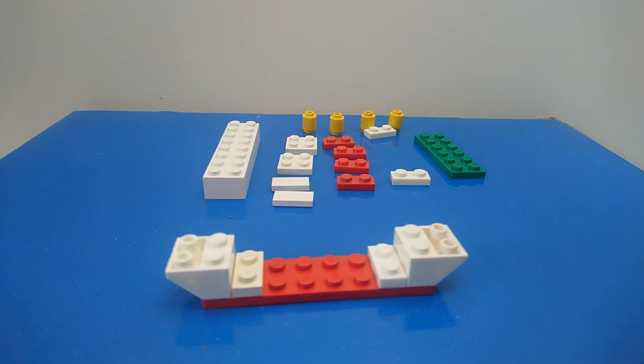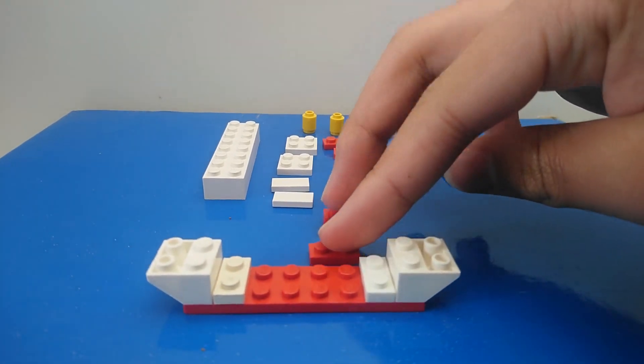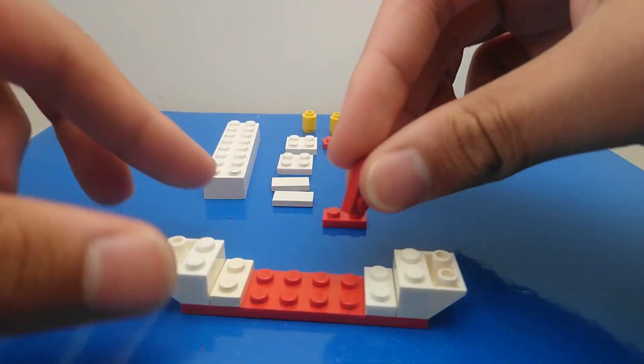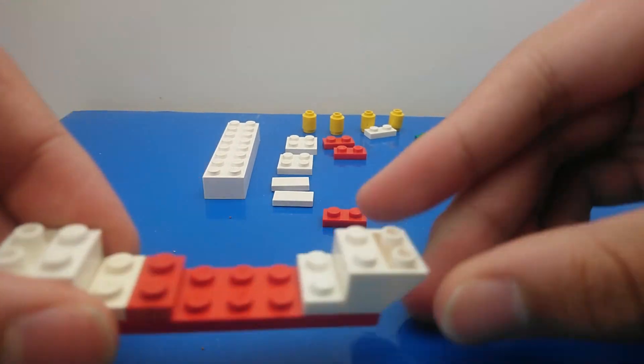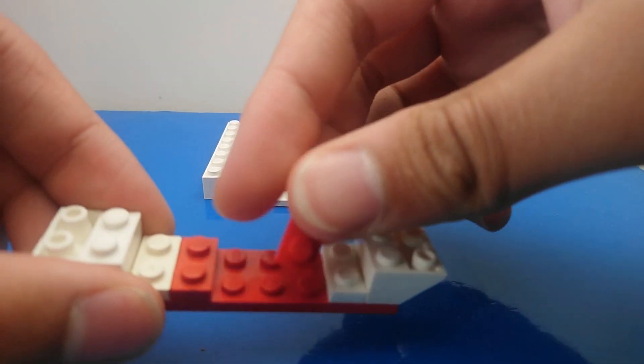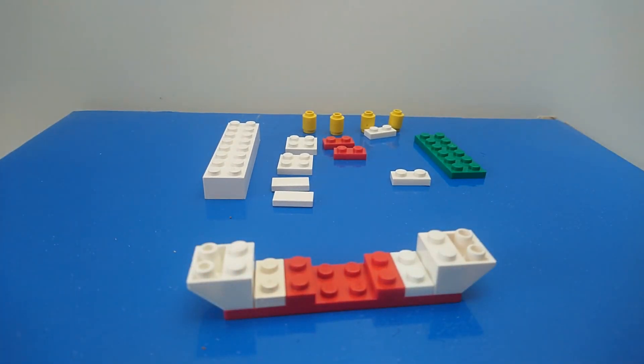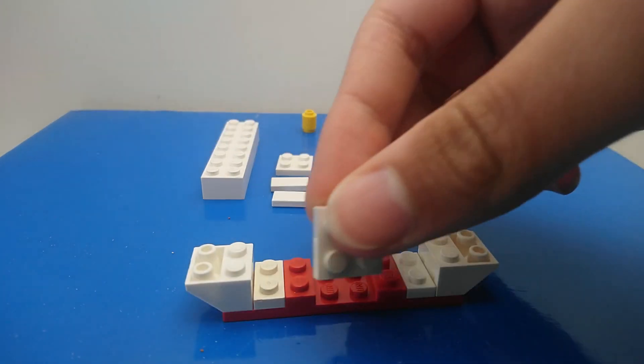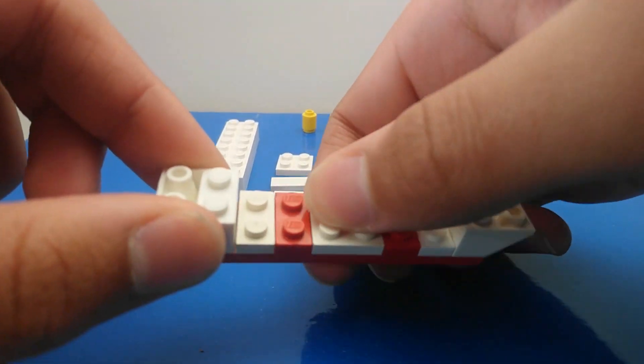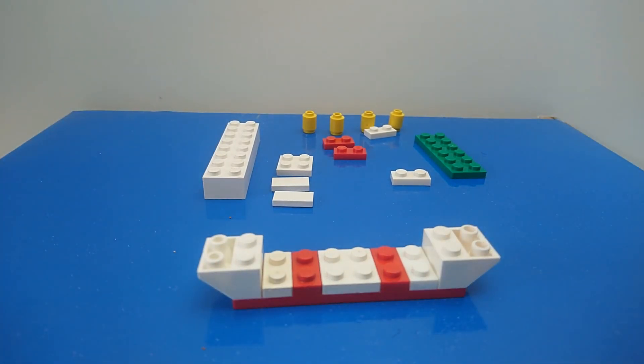Now to make the cross, we're going to take two of our 1x2 red pieces and we're going to put one as far as you can to the end like that, and take the other one and place it on the other end there. Now to fill in the gap, we're going to take one of our 2x2 white plates and place that in the middle like that.